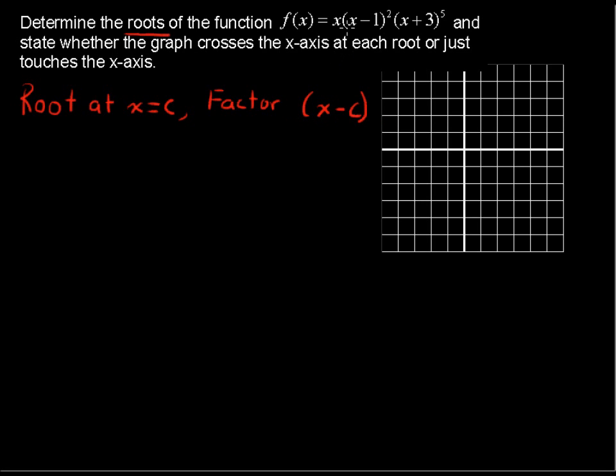So for example, we have a factor x minus 1. It's in that form of x minus c. So x equals 1 is a root of the function. And a root of the function is where the function equals 0. And when the function equals 0, the graph of the function will cross the x-axis, or just touch the x-axis.